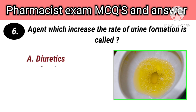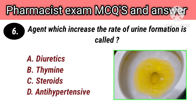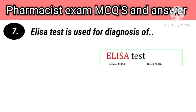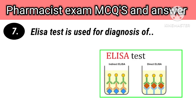Agent which increases the rate of urine formation is called options: A. Diuretics, B. Thymine, C. Steroids, D. Antihypertensive. Right answer is A. Diuretics.